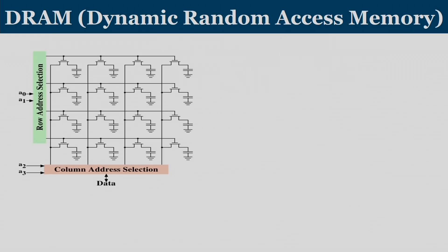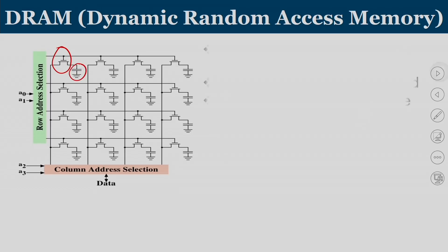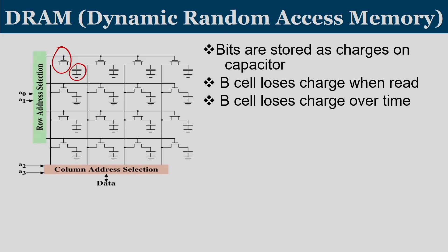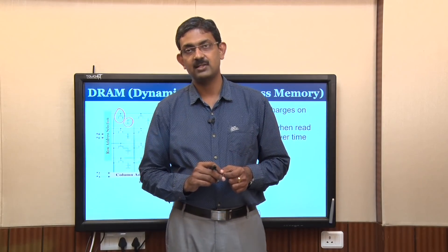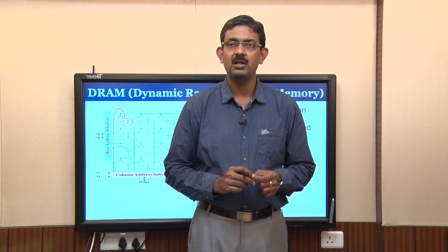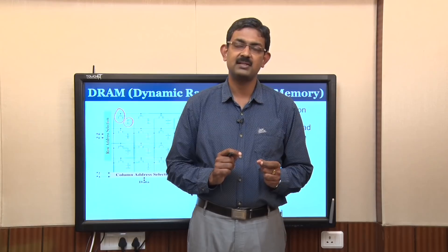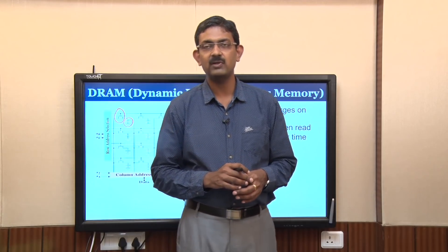Now let us see how DRAM is implemented. DRAM implementation uses far fewer components — only 1 transistor and 1 capacitor to store a single binary cell value. Bits are stored as charges on the capacitor, and a bit cell loses charge when you read. When there is a potential difference between the parallel plates of a capacitor we call it logic 1, and when the potential difference is less than a threshold value we call it logic 0.